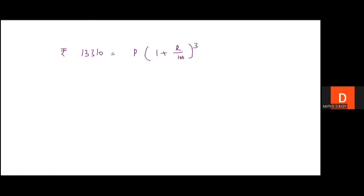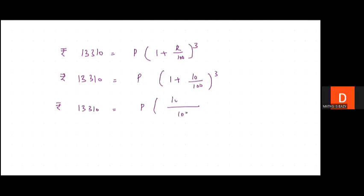Rupees 13,310 equals P × (1 + 10/100) raised to the power 3. I'm doing this step by step, not missing even a single step, so that it would make you absolutely clear what steps have been followed.